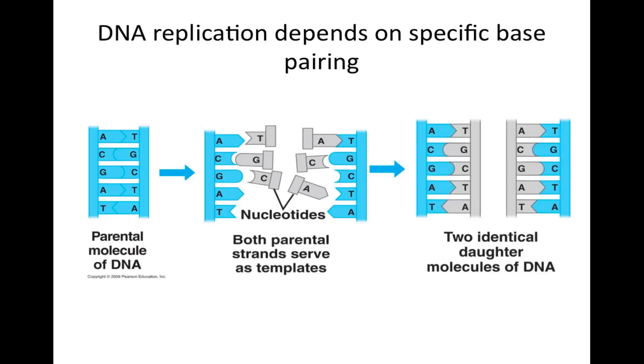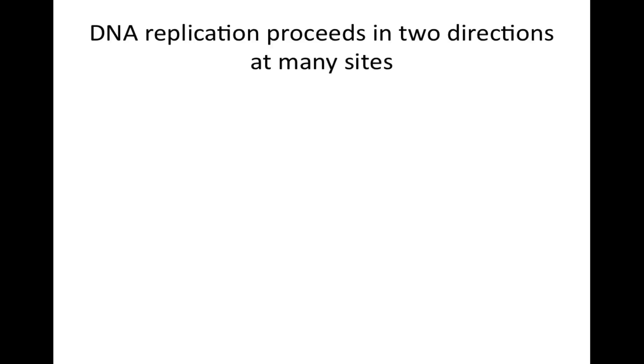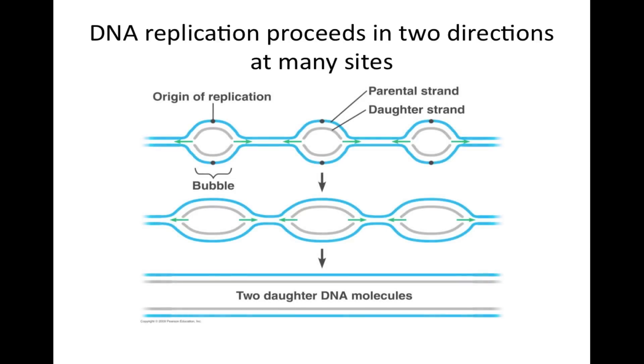The entire DNA replication is a semi-conservative model because half of the parental molecule is conserved in each daughter molecule. DNA replication proceeds in two directions in many sites. The DNA molecule being replicated can have many origins of replication, which are the starting points for replication that create bubbles. These bubbles have two directions which help give rise to the two daughter DNA molecules.